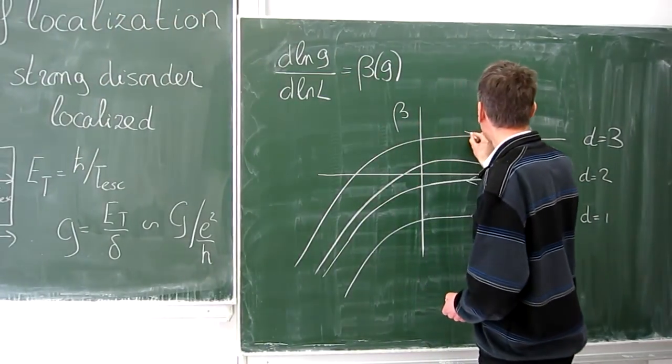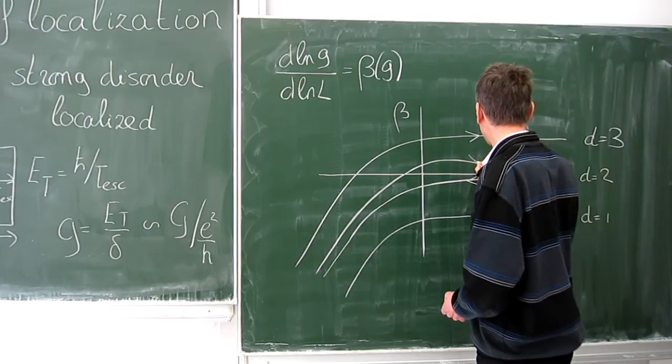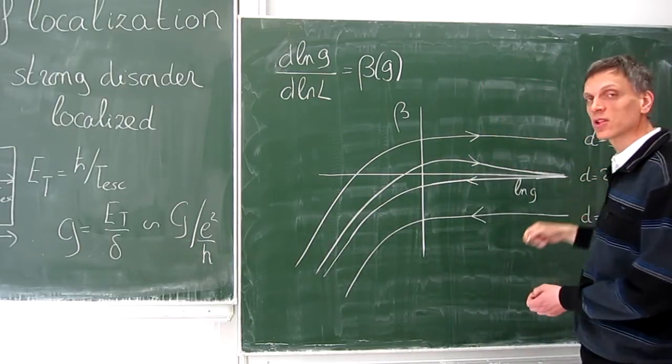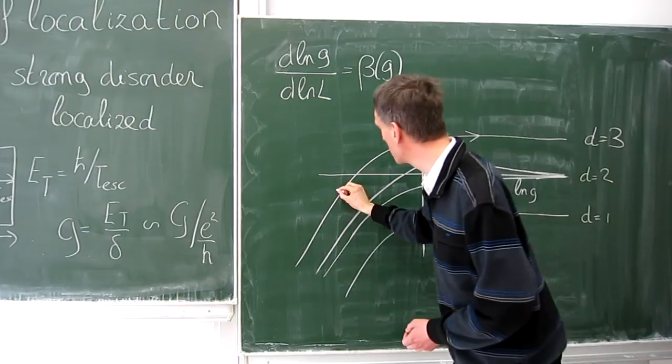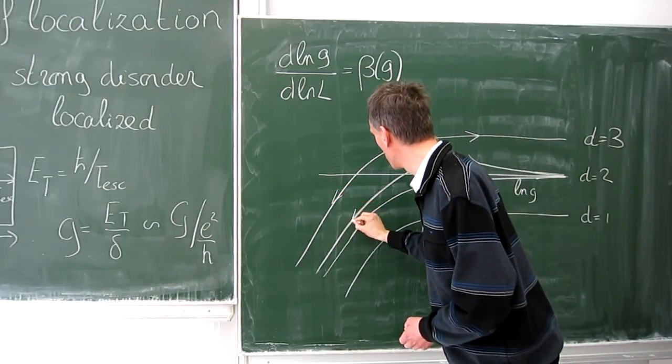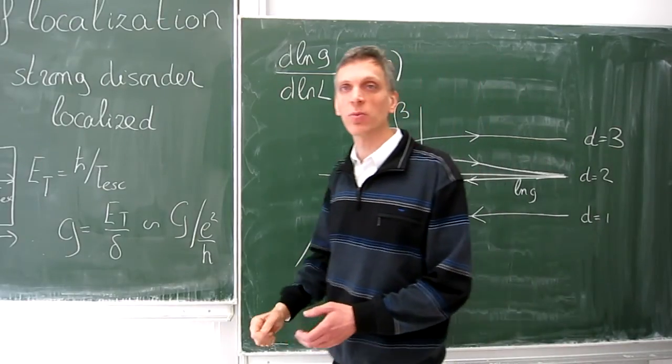Because beta is positive if g is large, meaning that at larger system sizes, conductance becomes even bigger, and beta is negative if g is much smaller than one.